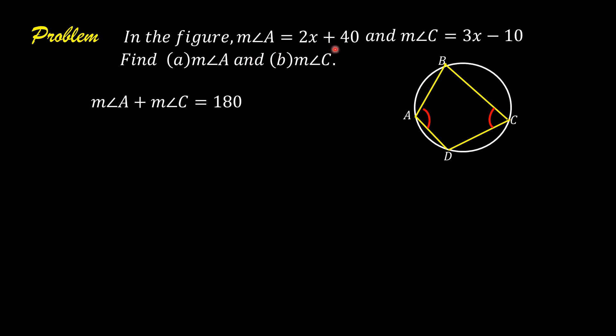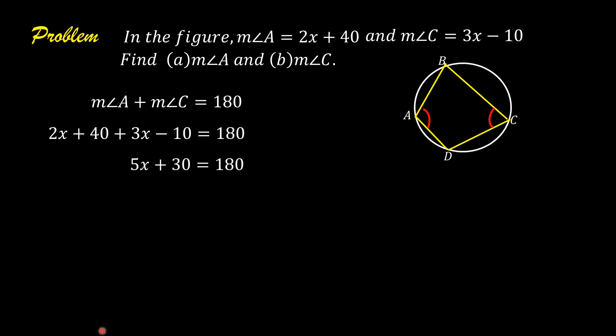Substitute 2x plus 40 for the measure of angle A, and 3x minus 10 for the measure of angle C. So, we have 2x plus 40 plus 3x minus 10 is equal to 180. Adding the like terms, we have 5x plus 30 is equal to 180. Subtracting 30 from both sides gives 5x is equal to 150. Dividing both sides by 5, x is equal to 30.